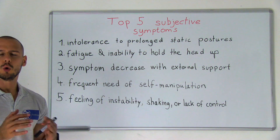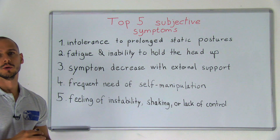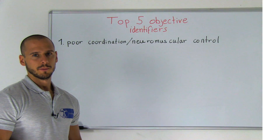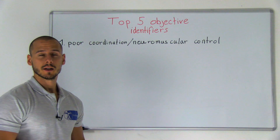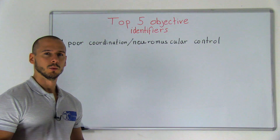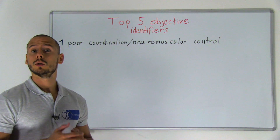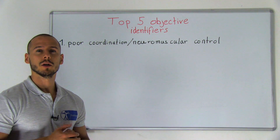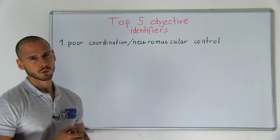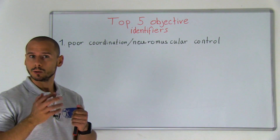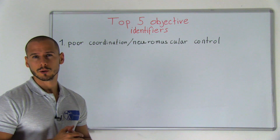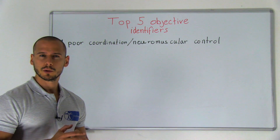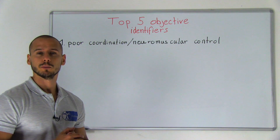The top five objective identifiers are: number one, poor coordination or neuromuscular control, including poor recruitment and dissociation of cervical segments with movement.